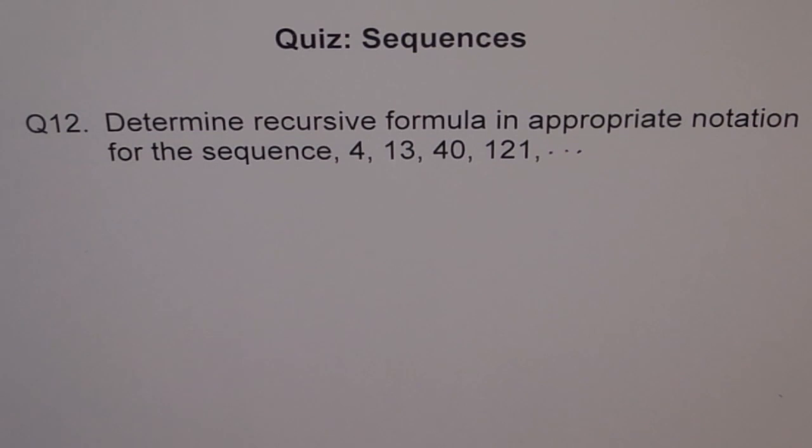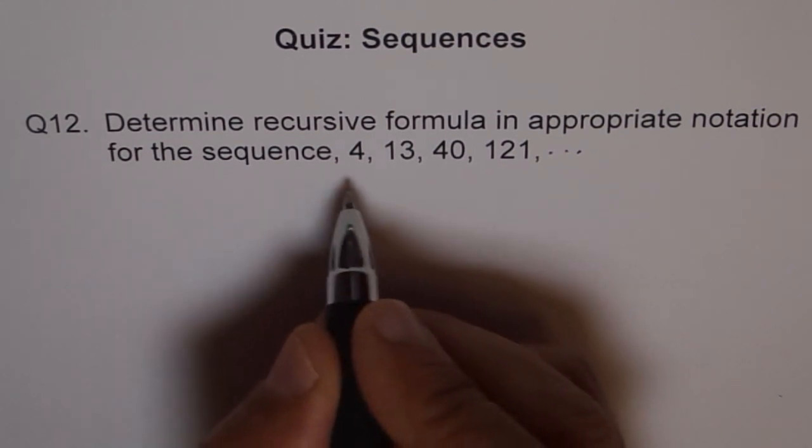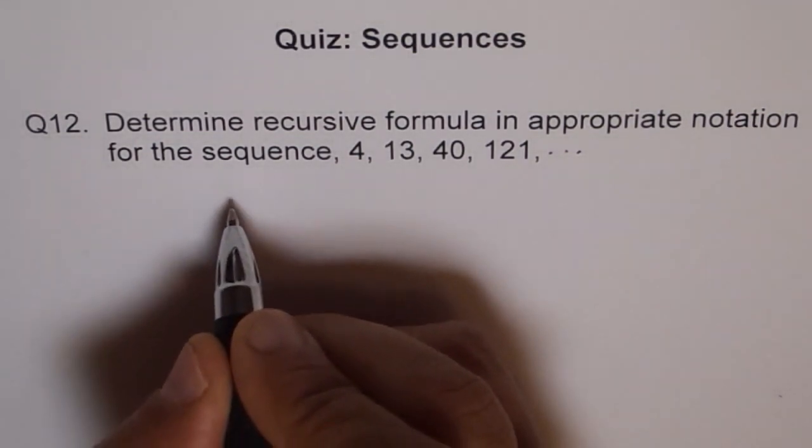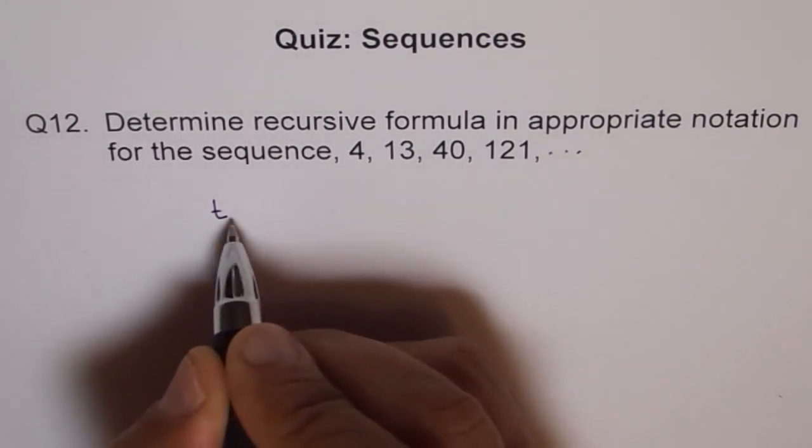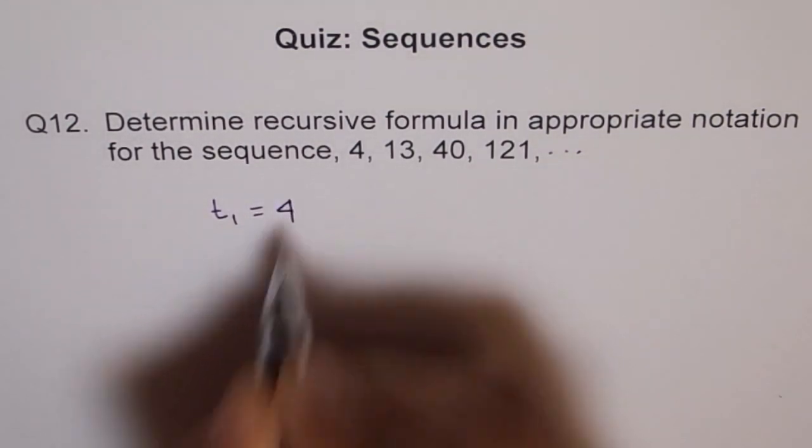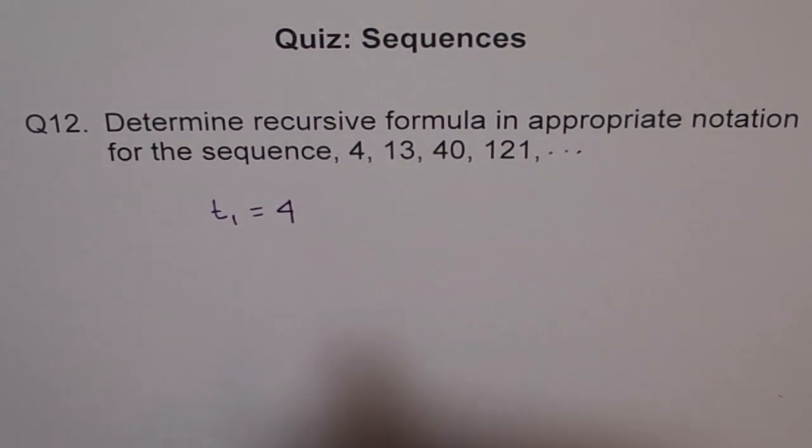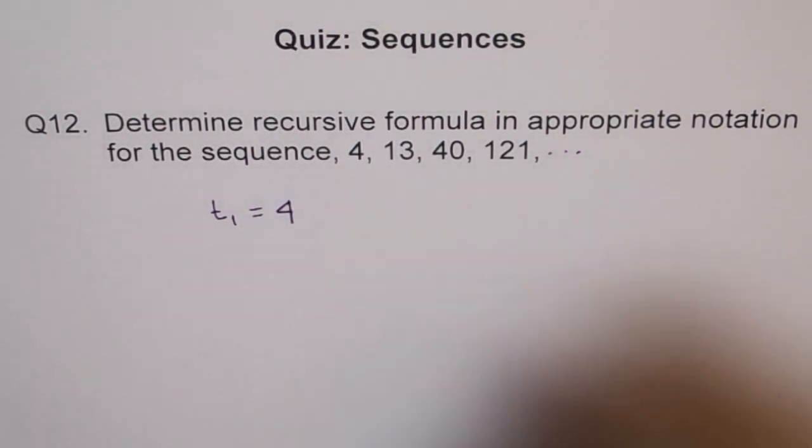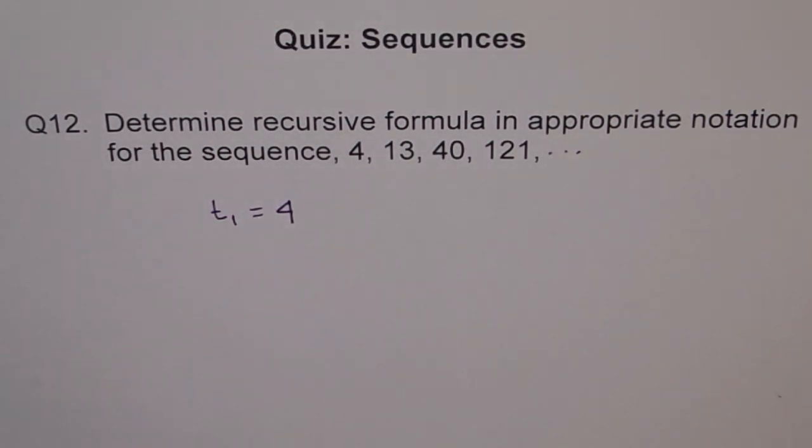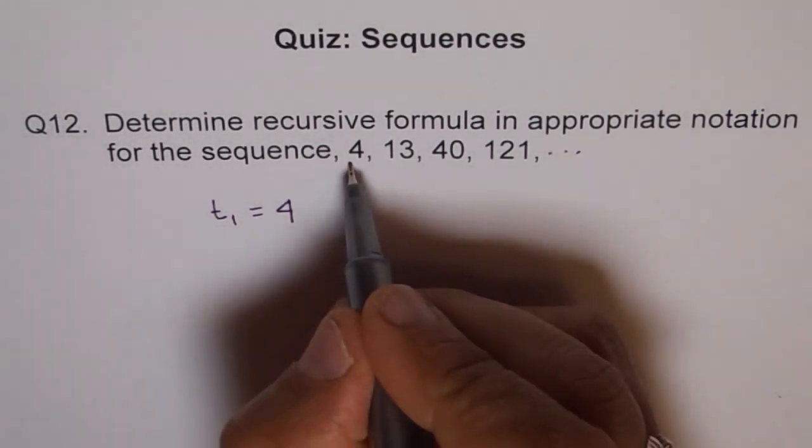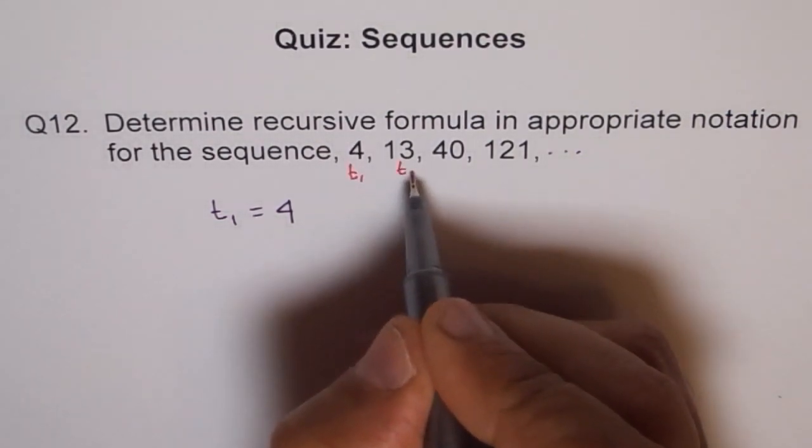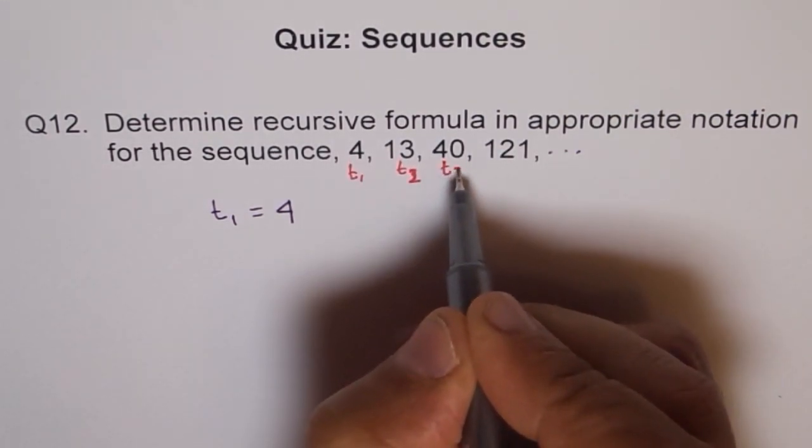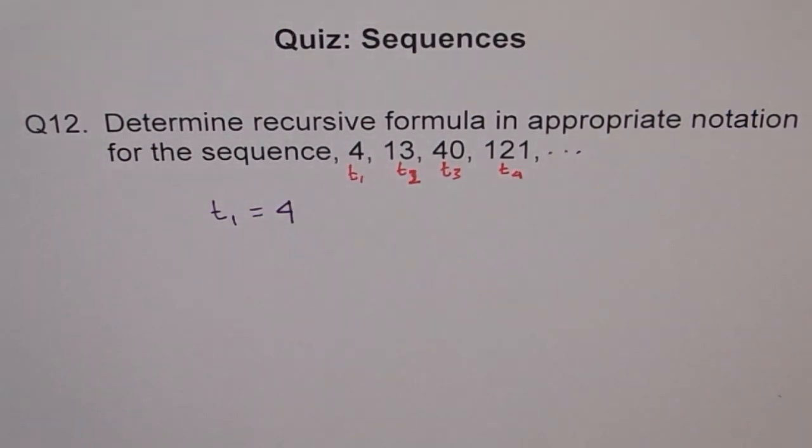Here, let's try with T1. The first term is, so first term for us is 1. So let's say let T1 equals to 4. Now how can we relate T2? So we have this as T1. Let me write the terms here. T1 is 4 for us, T2 is 13 for us, T3 is 40 and T4 is 121.